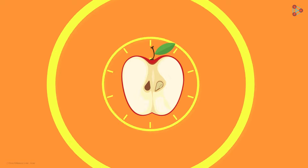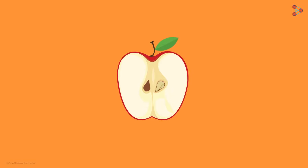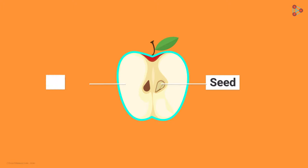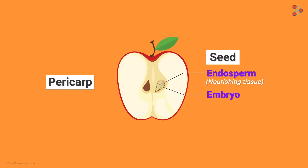Now if we were to label this fruit, we would basically divide it into two major parts: this central region as the seed, and the surrounding pulpy region as the pericarp. The seed mainly has the embryo, which is located here, surrounded by the nourishing tissue called the endosperm. This complete unit is surrounded by a tough covering called the seed coat, meant mostly for protection.